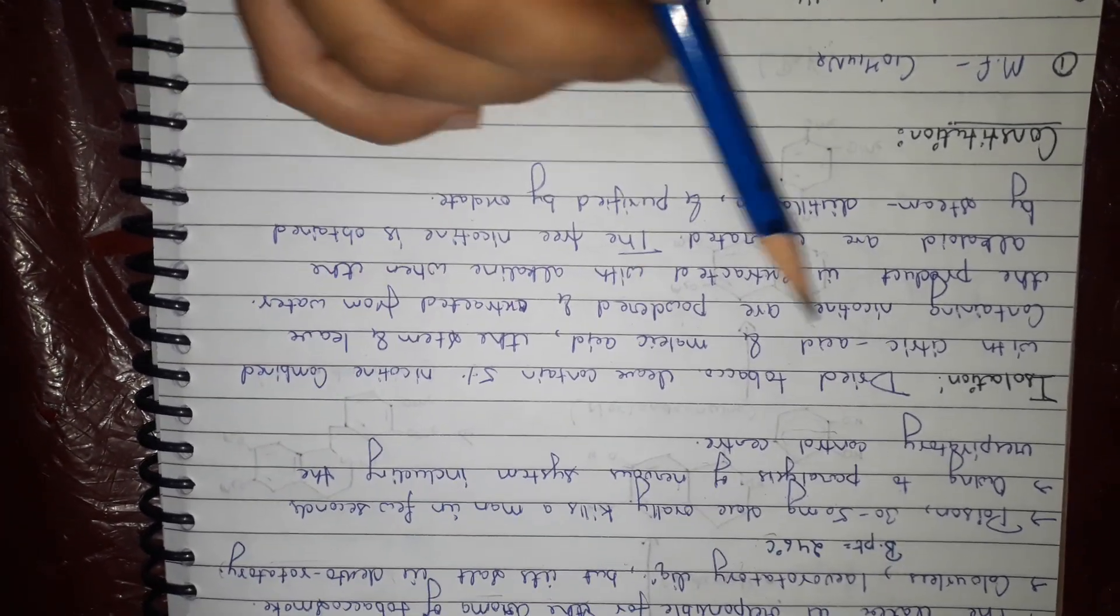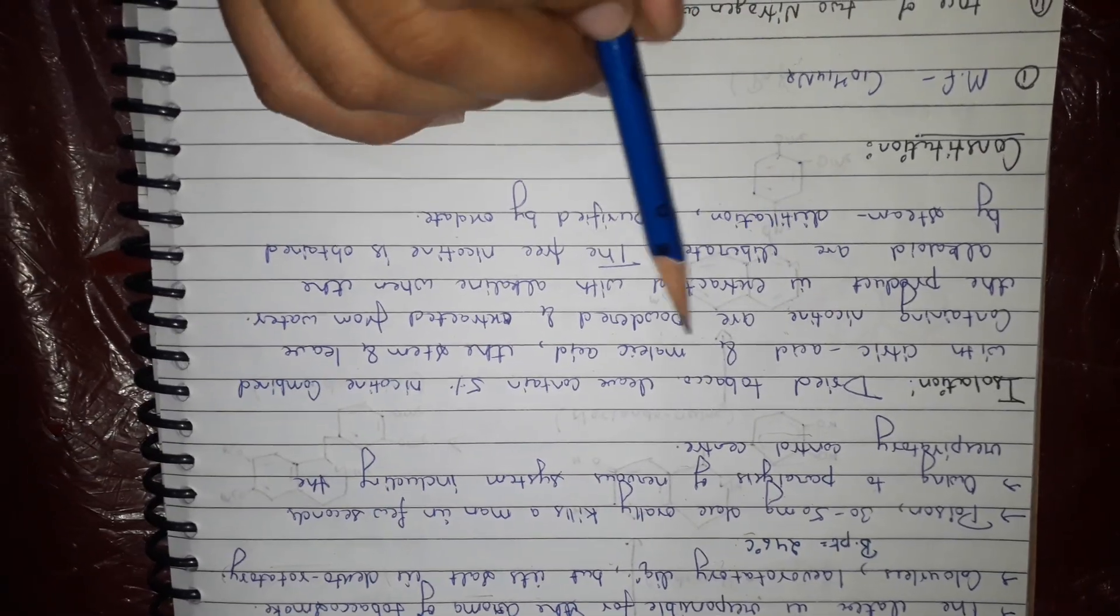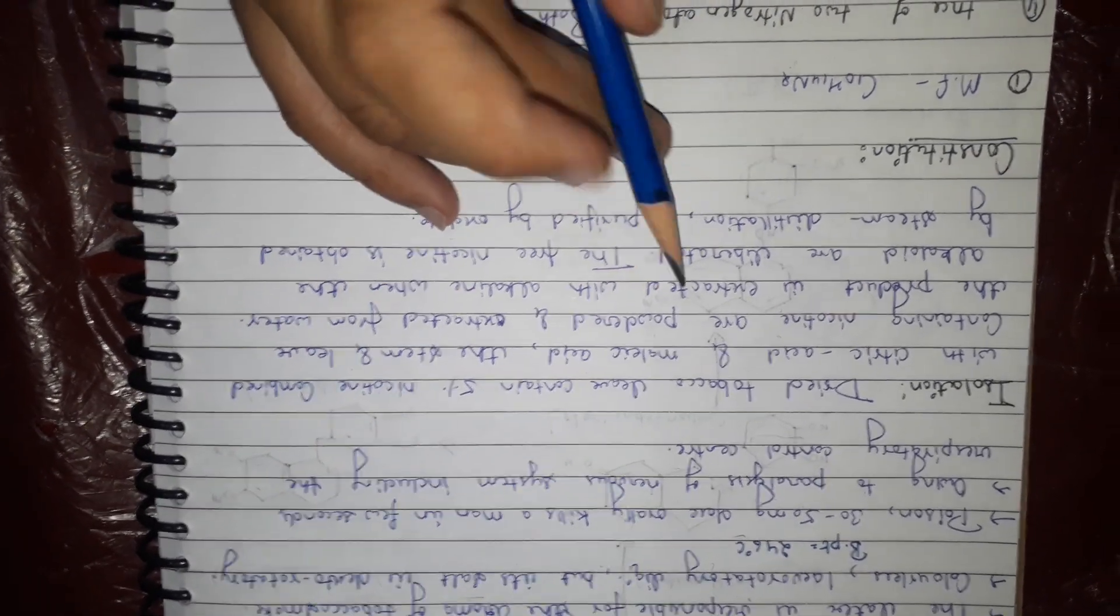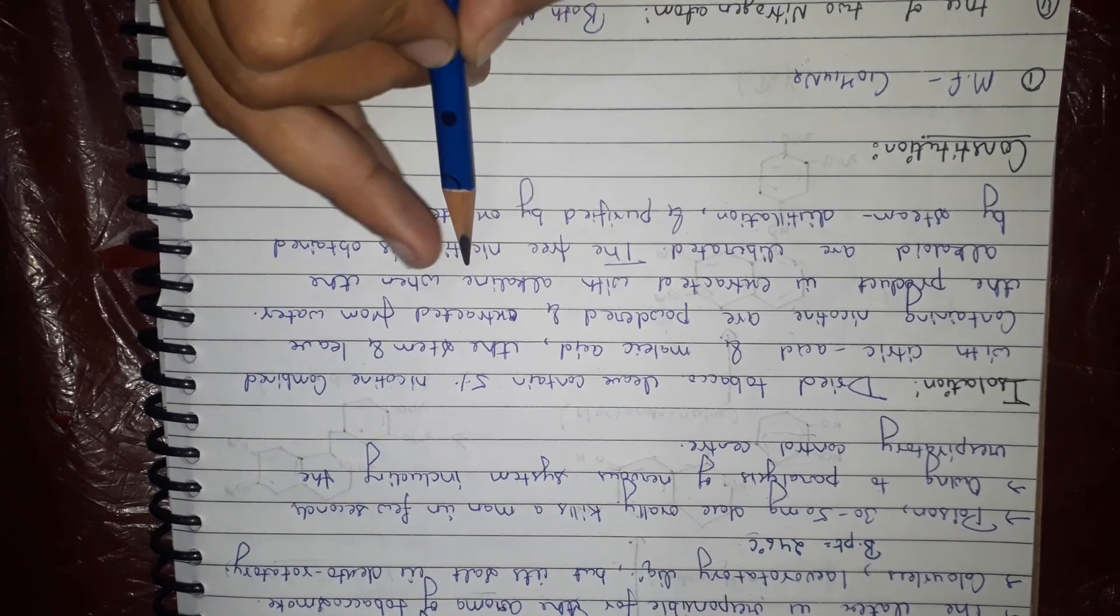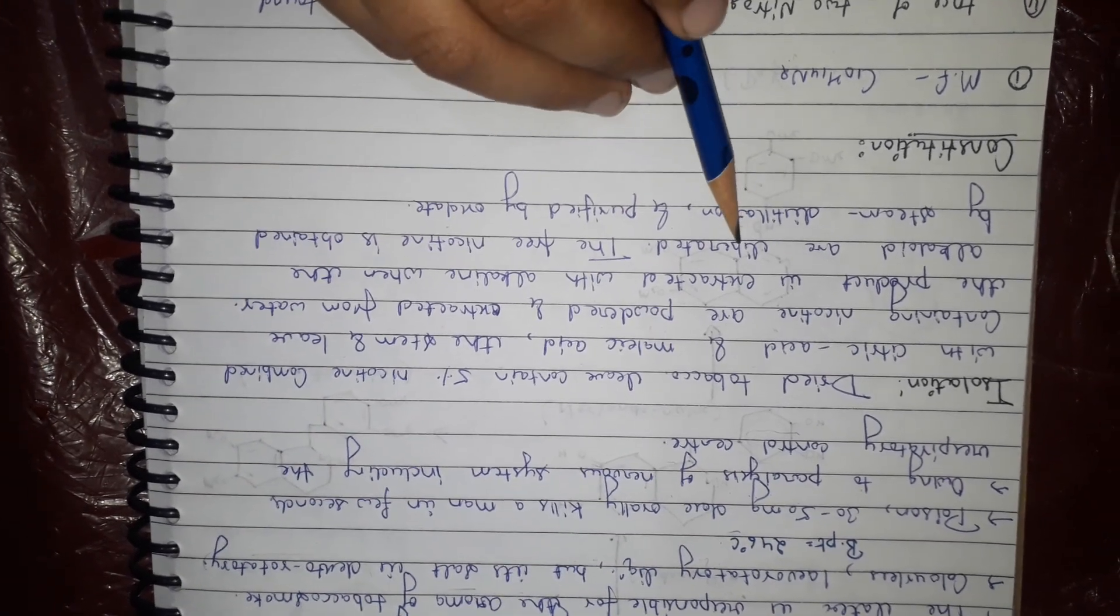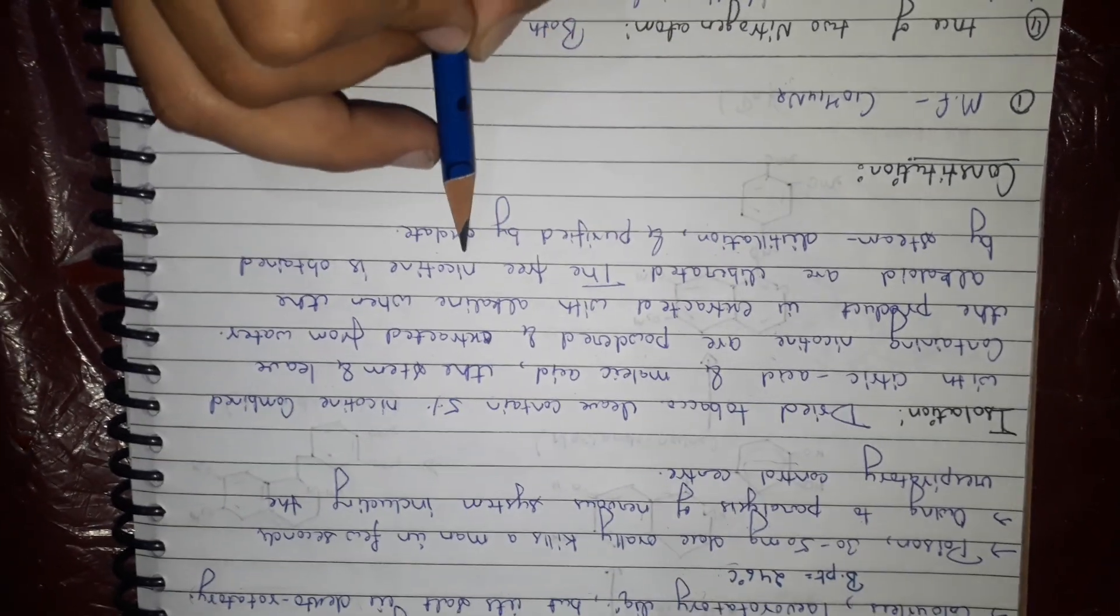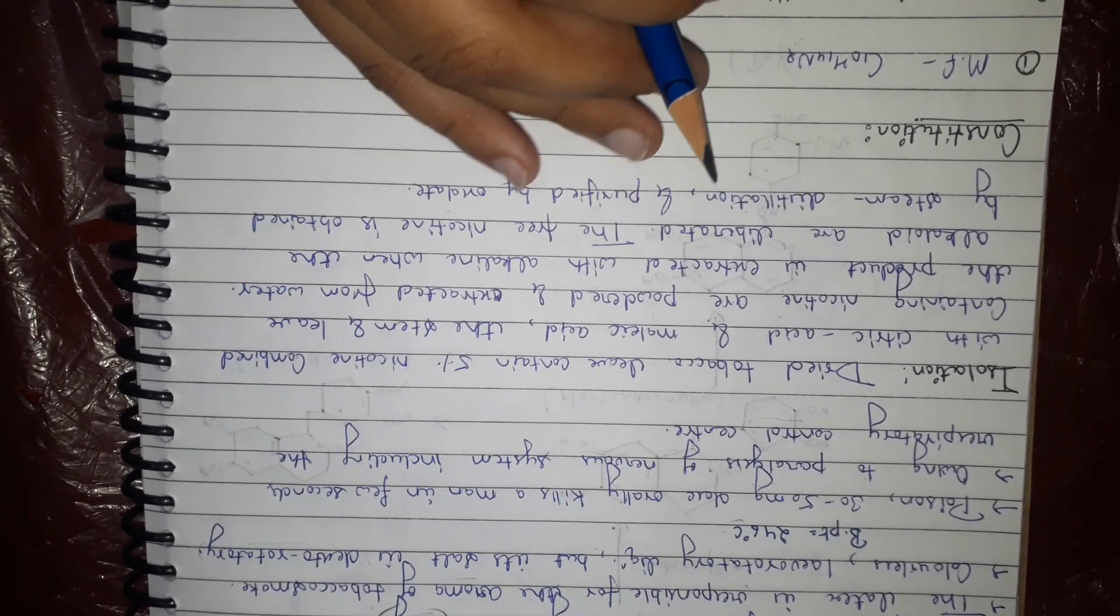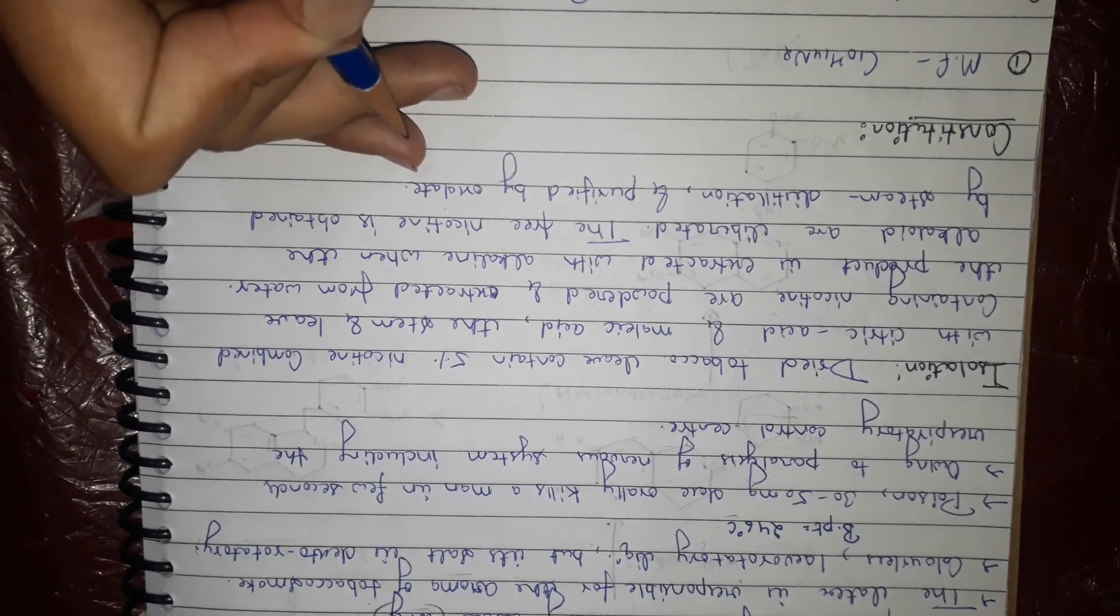The leaves containing nicotine are powdered and extracted with water. The product is extracted with alkali where the alkaloids are liberated. The free nicotine is obtained by steam distillation and purified by oxalate.